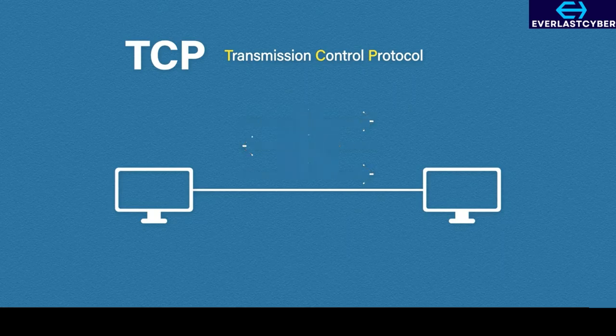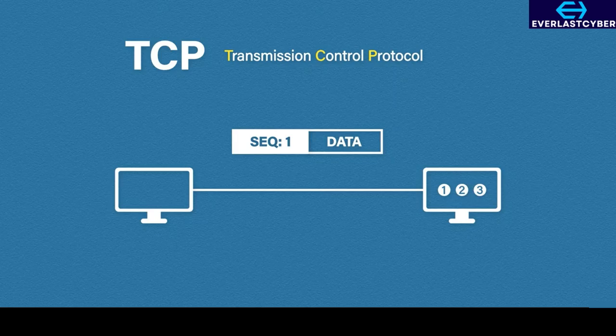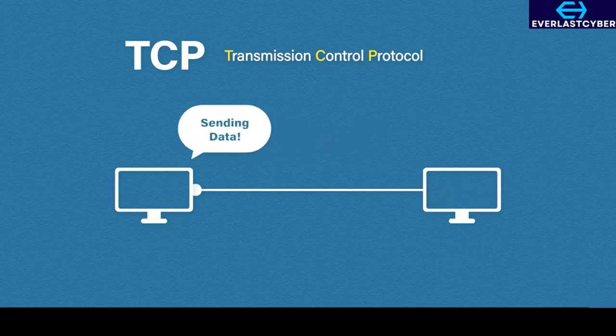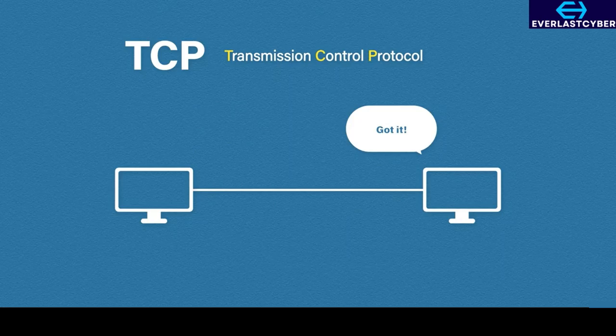The next thing we are going to look at is sequence numbers. TCP will assign numbers to segments as they are sent. This way, the receiving device can collect these segments, reorder them correctly, and determine if any segments are missing. The sequence number is just one field in the TCP header. These messages are then acknowledged — it is almost like saying 'sending data' and the receiving computer says 'got it,' and so on. The way this works is by using sequence numbers and acknowledgement numbers.